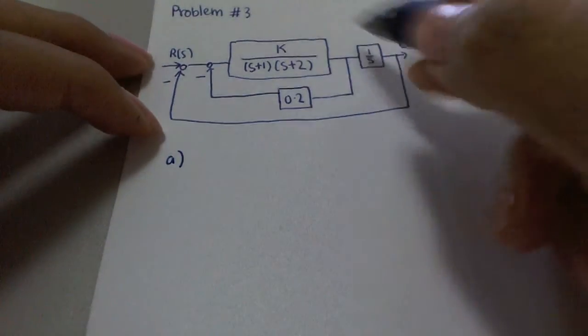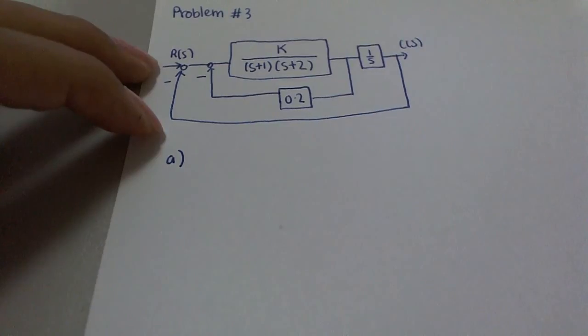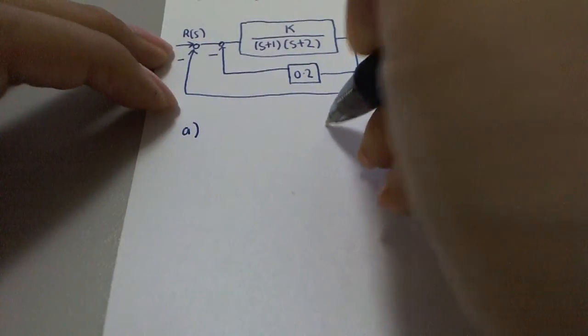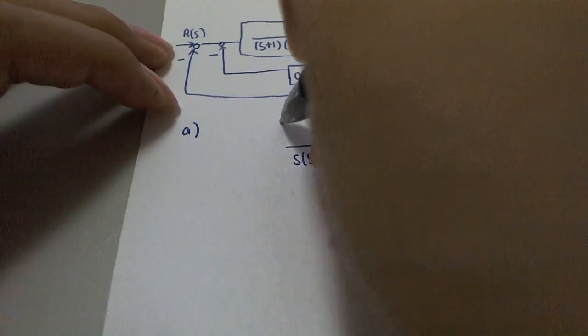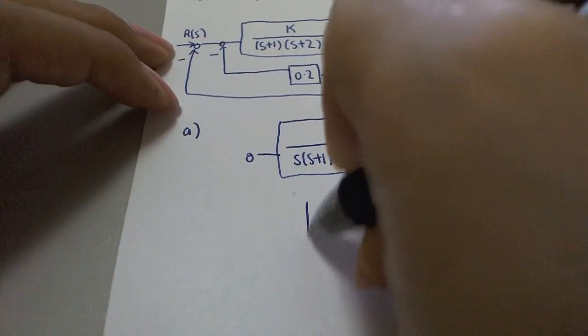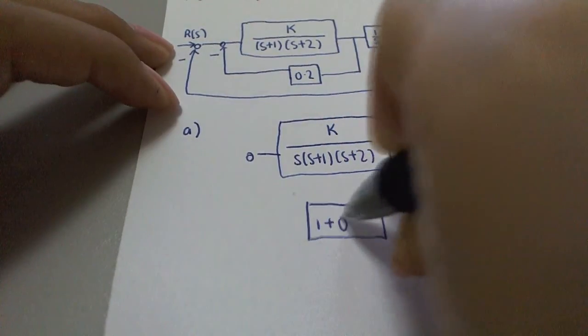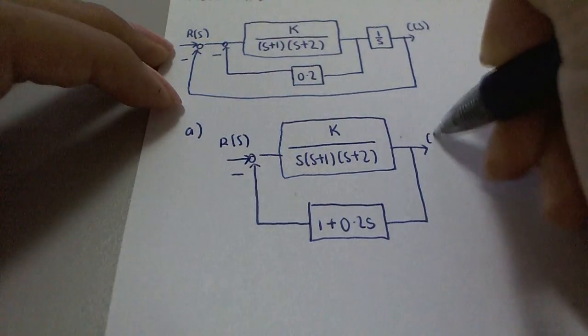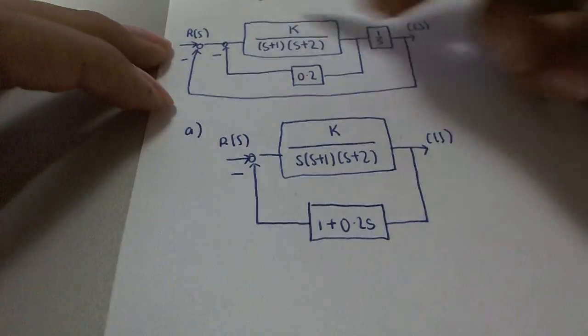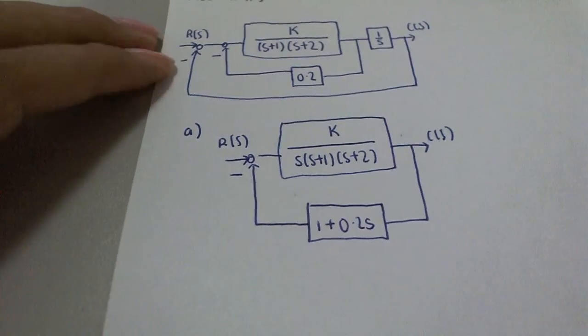For the first part, we have to show that this block diagram is actually equivalent to another block diagram given in the question, which is k over s(s+1)(s+2) in the forward loop, with a feedback loop that has a gain of 1 plus 0.2s as a negative feedback into our system.